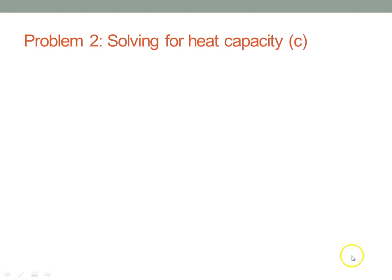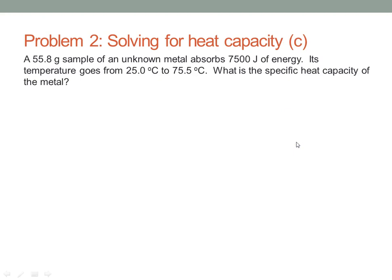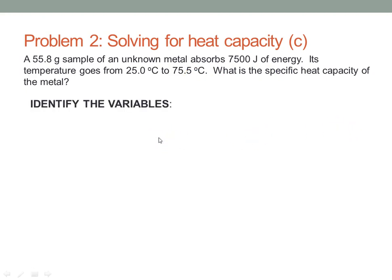The second problem we'll try is solving for specific heat, C. The problem is: a 55.8 gram sample of an unknown metal absorbs 7,500 joules of energy. Its temperature goes from 25 to 75.5 degrees C. What is the specific heat capacity of the metal? Identify the variables — Q is given as 7,500 joules.